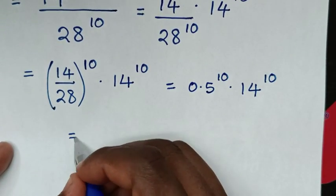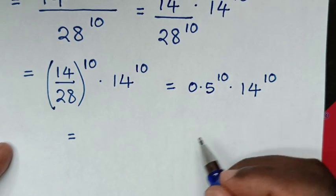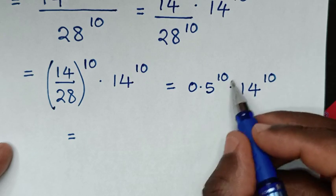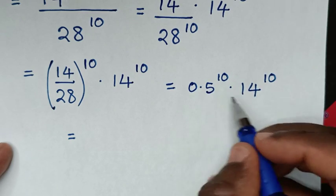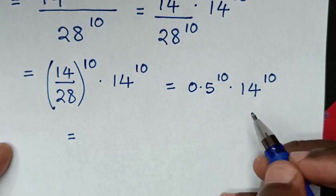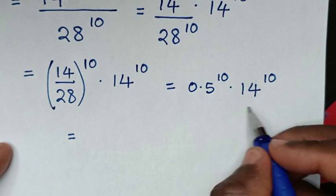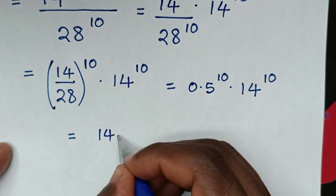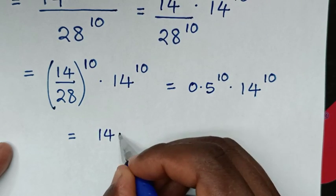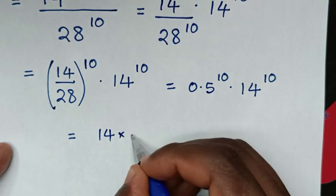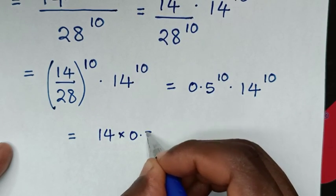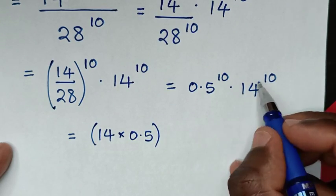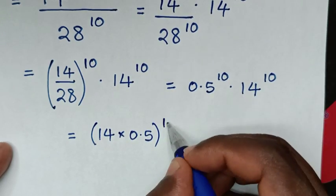Then it will be equal to — in here is a multiplication of exponents with the same power of 10 — so we'll multiply the bases, which is 14 times 0.5, then bracket with the same power of 10.